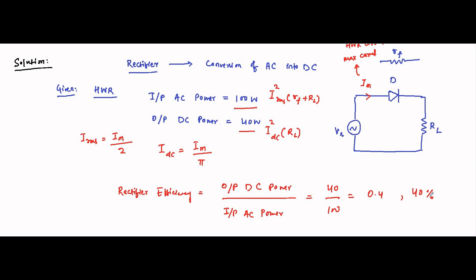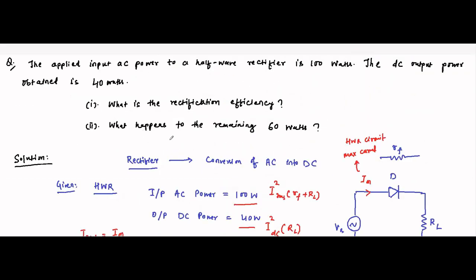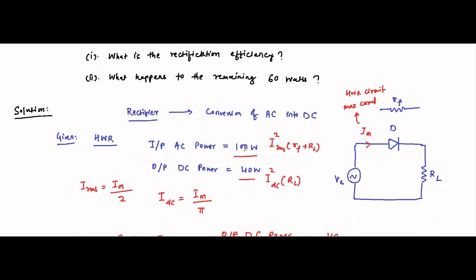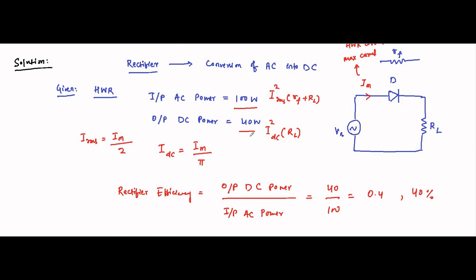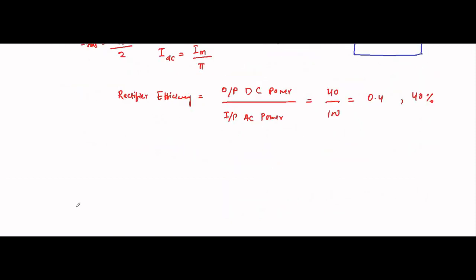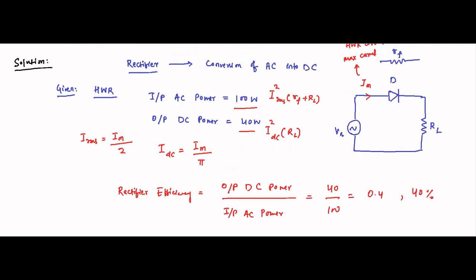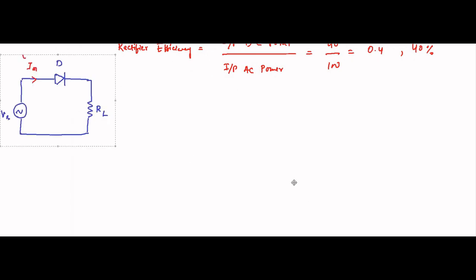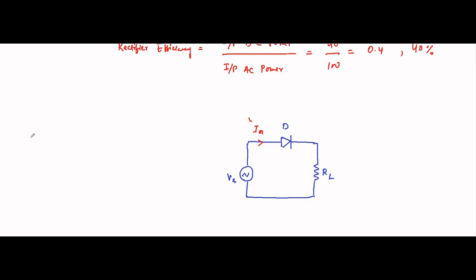The second part of the question asks: what happens to the remaining 60 watts? Out of the total 100 watts given as input, only 40 watts is converted into DC. If you recall a half wave rectifier circuit, the AC input consists of both positive and negative half cycles. This is the positive half cycle and this is the negative half cycle.